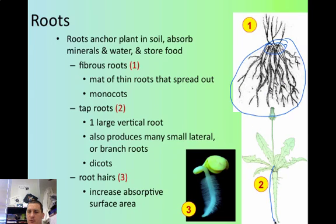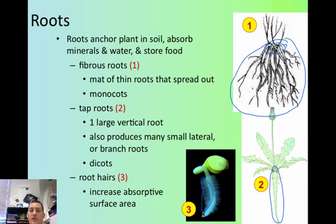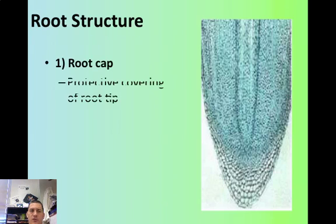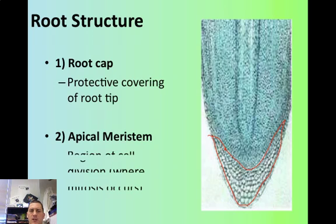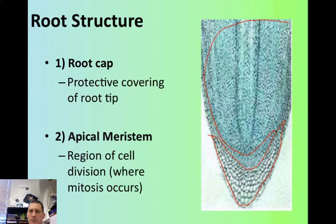Number two is a tap root. When you think of a tap root, think of a carrot. It's going to have one main central root with very small lateral branches coming off of it. These lateral roots increase the absorptive surface area so that the plant absorbs more water. Then you have smaller root hairs, which you see mainly in aquatic plants — these also increase the absorptive surface area. The root cap is the protective covering of the root tip. Then your next part is the meristem tissue, which is the region of cellular division where mitosis occurs.